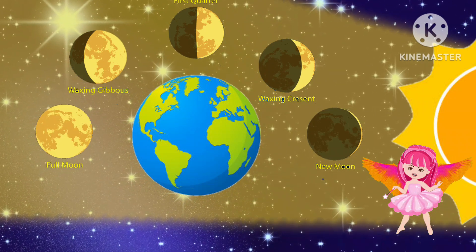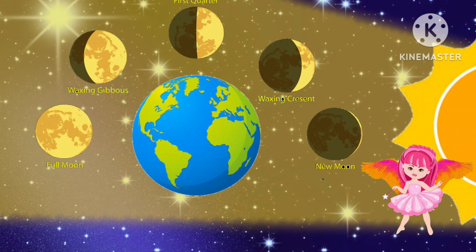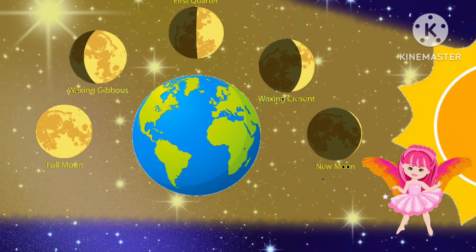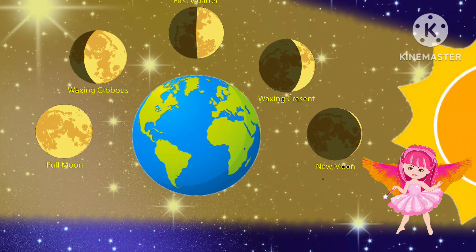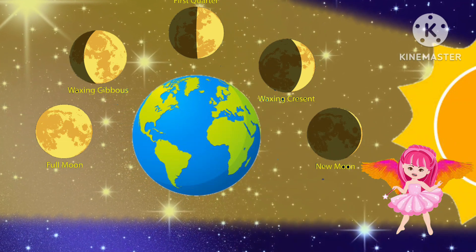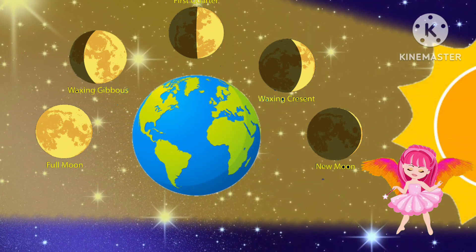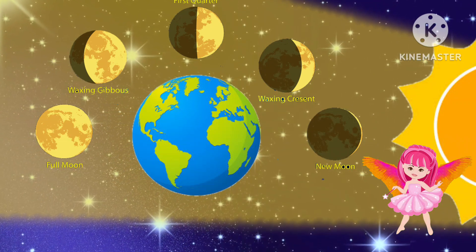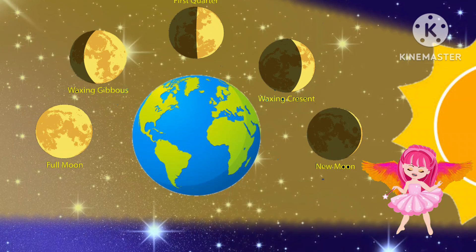Then after a few days, the moon reaches behind the earth, and the full side of the moon facing the earth gets sunlight, and we can see the full moon.